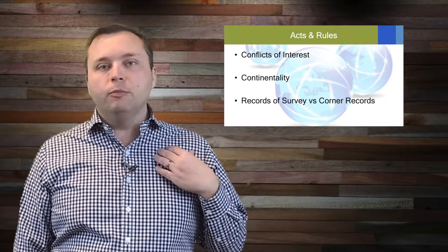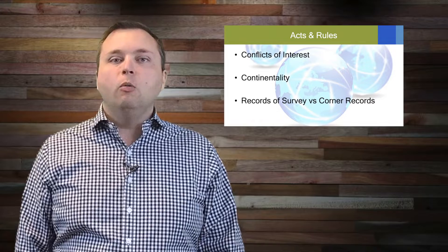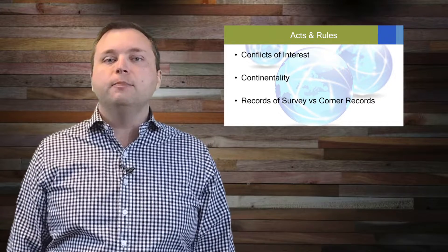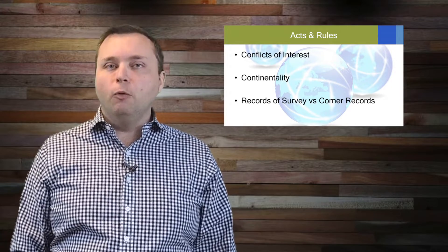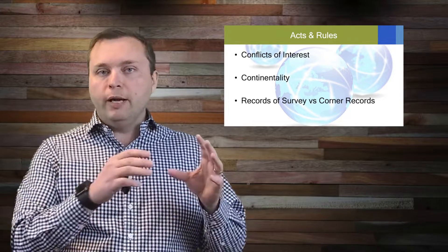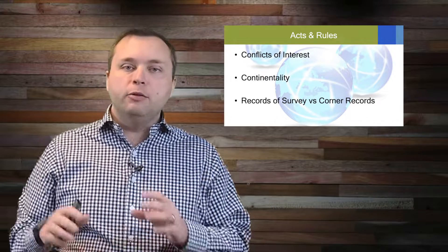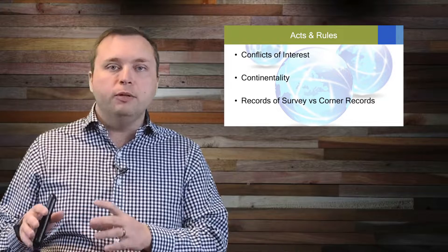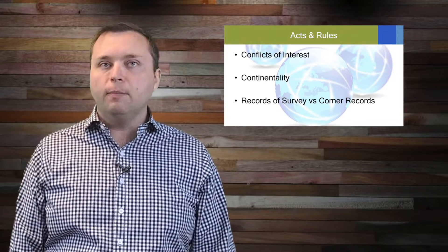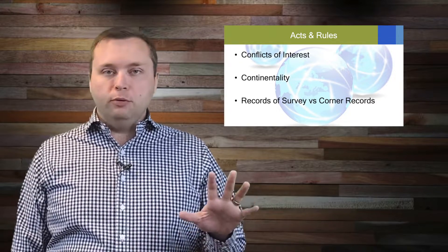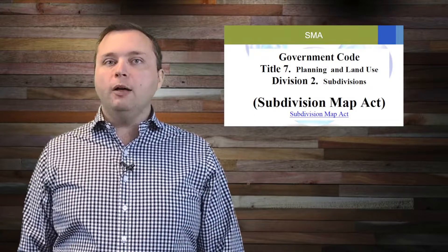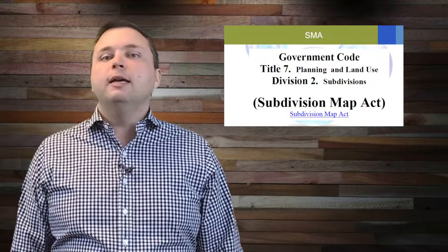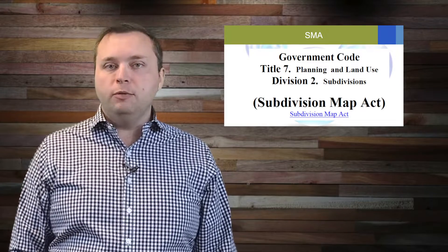Now I come from a state like Texas where we don't have any of this stuff. There's no such thing as a corner record in Texas. But in California there's a corner record for the actual monument corner and then there's a record of survey for the parcels. So make sure you know the difference between an ROS and a CR. That's really the acts and rules. The other thing which really shocks people, this is kind of the yin to the yang, is the subdivision map act.